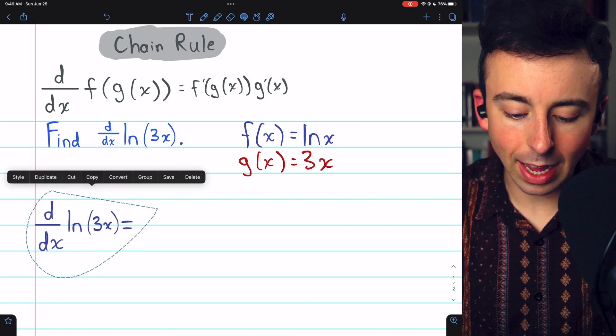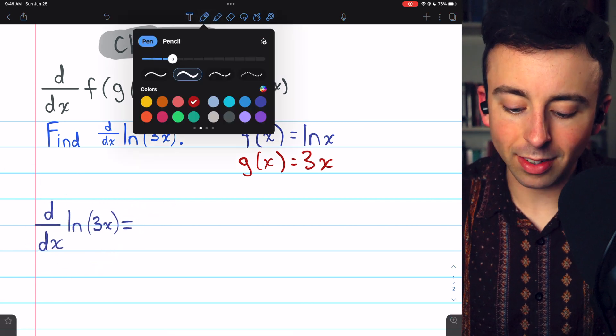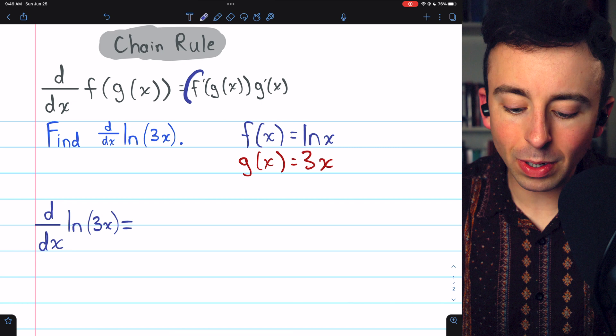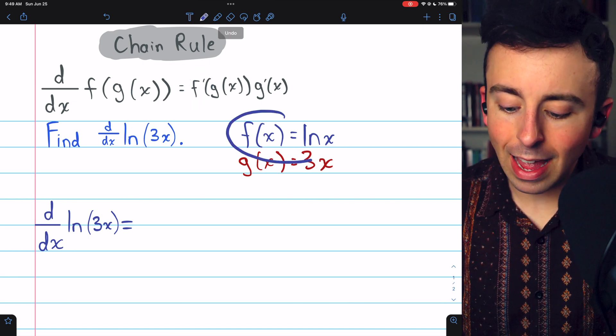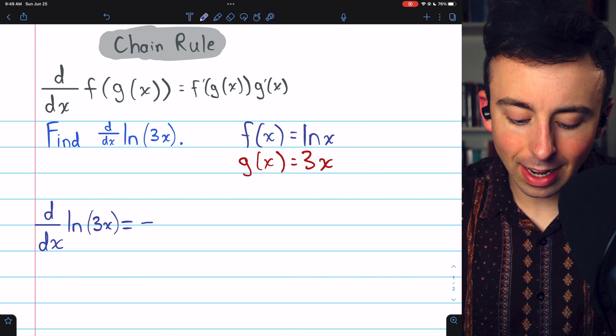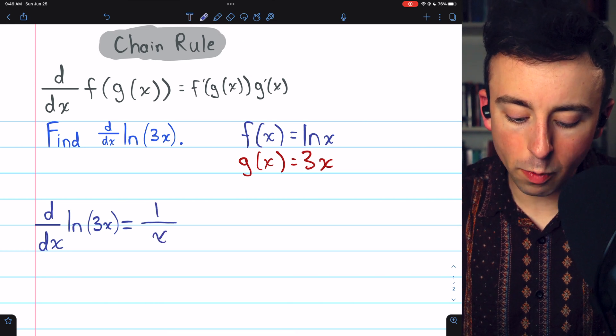Having identified f and g, we can use the chain rule, which tells us the derivative will begin with f prime, the derivative of the outside function. The outside function is ln x, and its derivative is 1 over x.